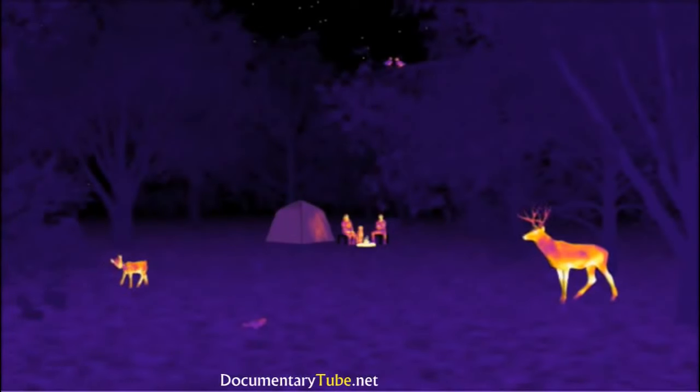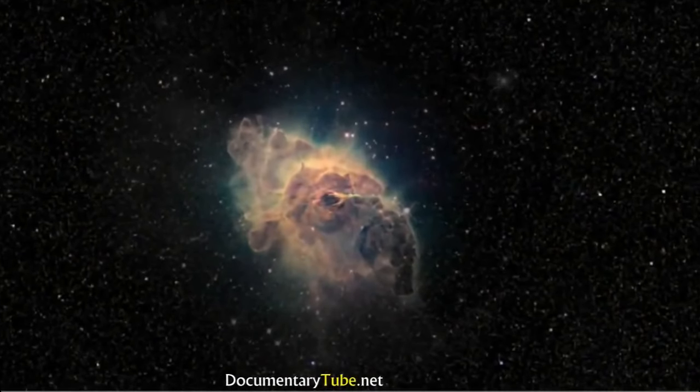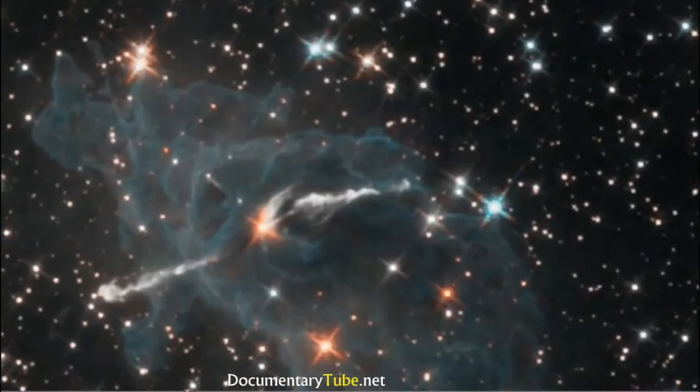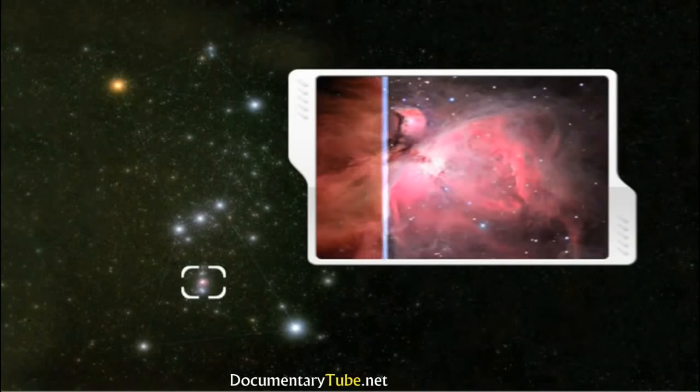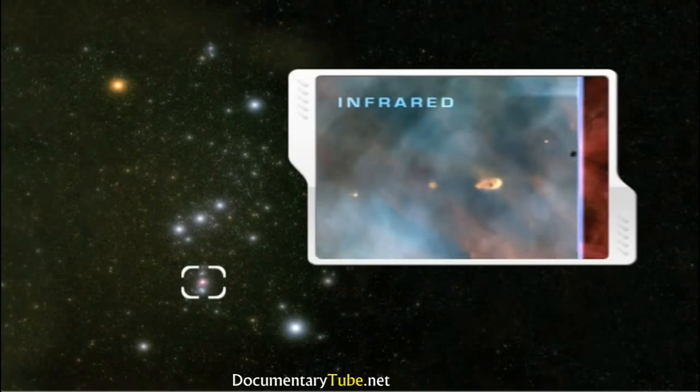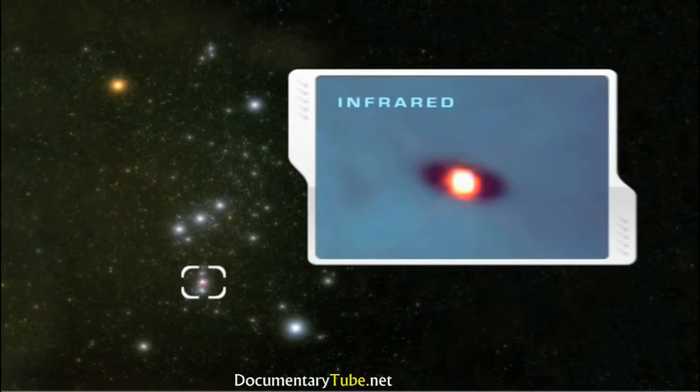Infrared energy can also reveal objects in the universe that cannot be seen with optical telescopes. Infrared waves have longer wavelengths than visible light and can pass through dense regions of gas and dust with lower scattering and absorption. When you look up at the constellation Orion, you see only the visible light. But NASA's Spitzer Telescope was able to detect nearly 2,300 planet-forming discs in the Orion Nebula by sensing the infrared glow of their warm dust. Each disc has the potential to form planets and its own solar system.